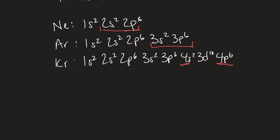Let's check sodium out. Sodium, with its 11 electrons as a neutral atom, has an electron configuration as such. In this valence shell, we only have one electron. Elements typically want to have an electron configuration like that of a noble gas.